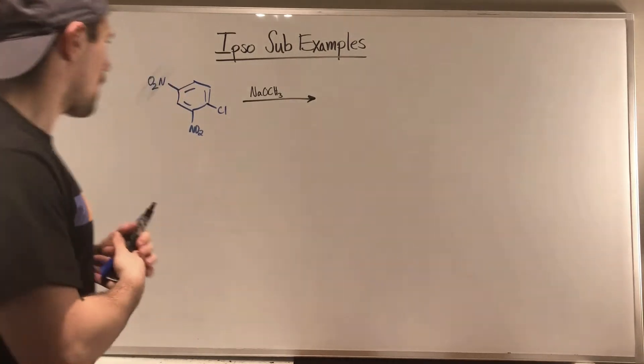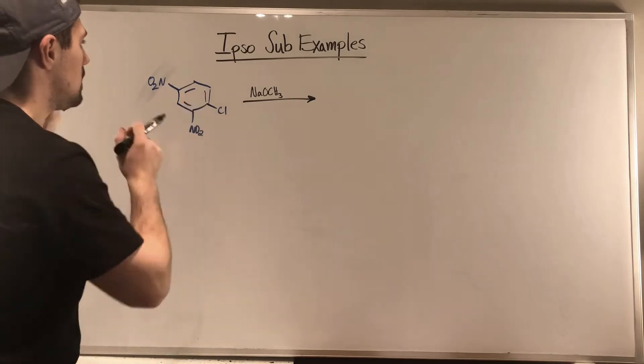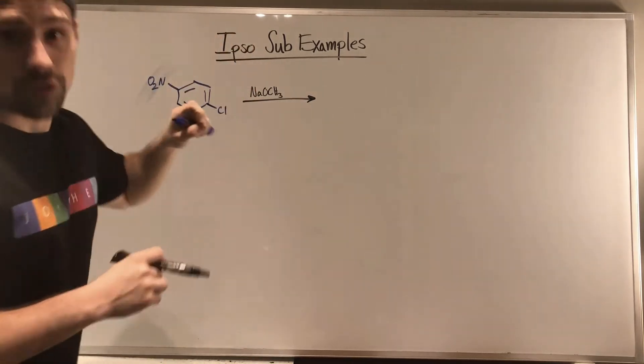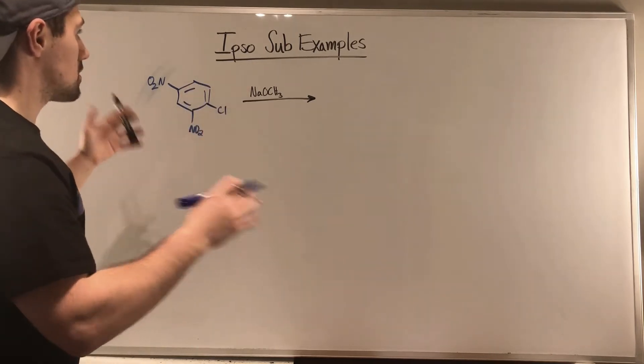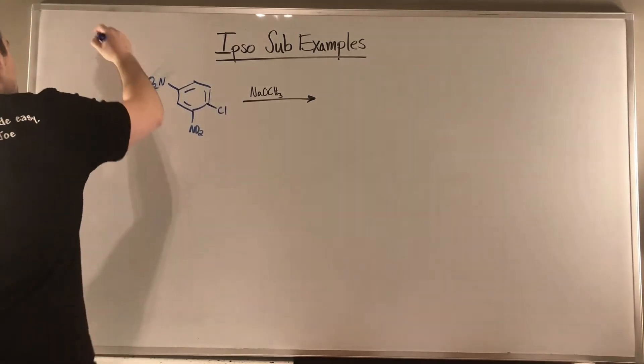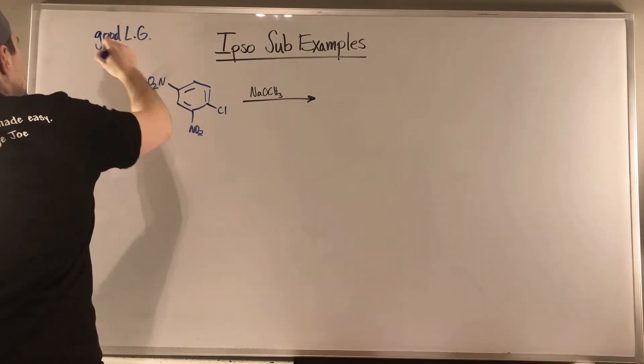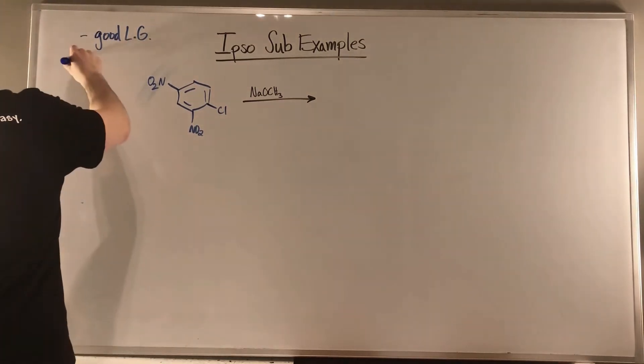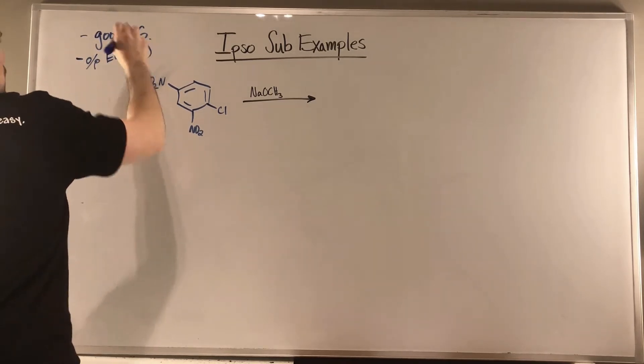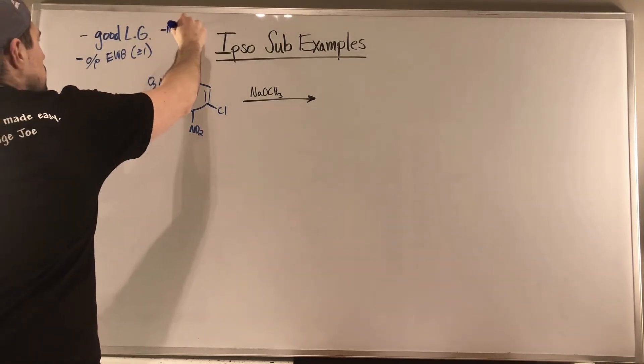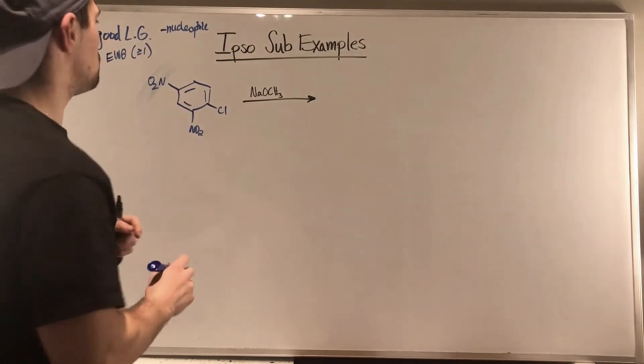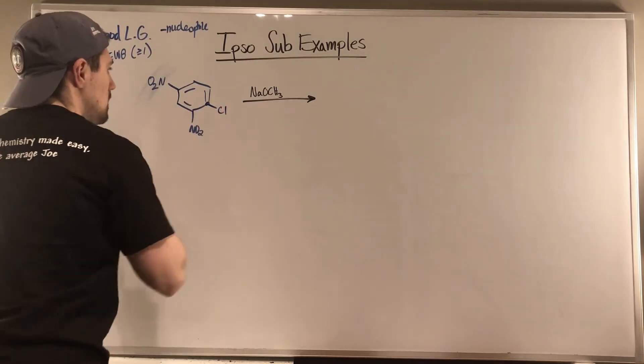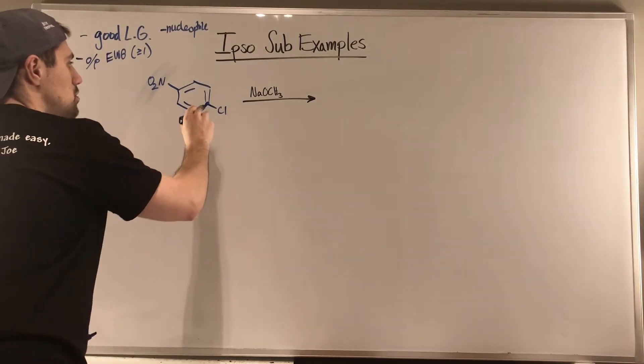Let's rip through these three examples. In this problem we're given a substrate, something over the arrow, and we're supposed to come up with a product. When we're doing ipso substitution examples, I'm looking for a good leaving group. We're always looking for a good leaving group. I'm looking for my ortho-para EWG condition - we need n greater than or equal to one. We obviously need a nucleophile. In this example, chlorine is certainly our good leaving group, so that's a check.